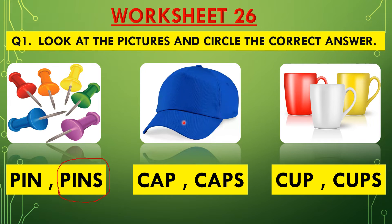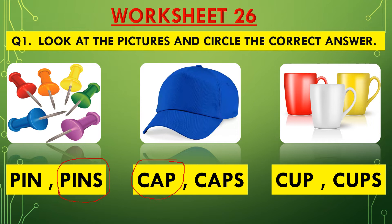Now let's go to the next picture. One or many? Only one, isn't it? So in one, we add S or not? No, we don't add S in one. Which is the correct answer: C-A-P cap or C-A-P-S caps? No S — that means cap is the correct answer. Let us circle the correct answer: C-A-P, cap.